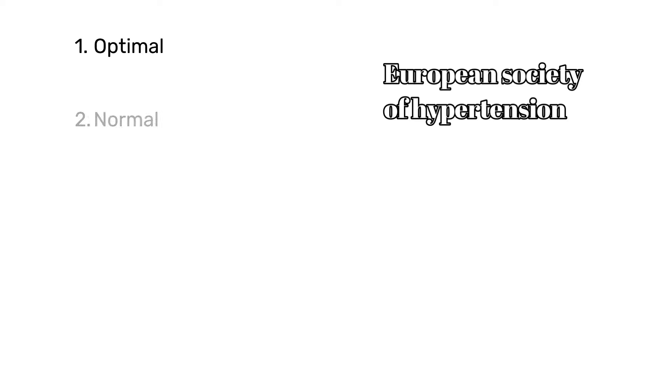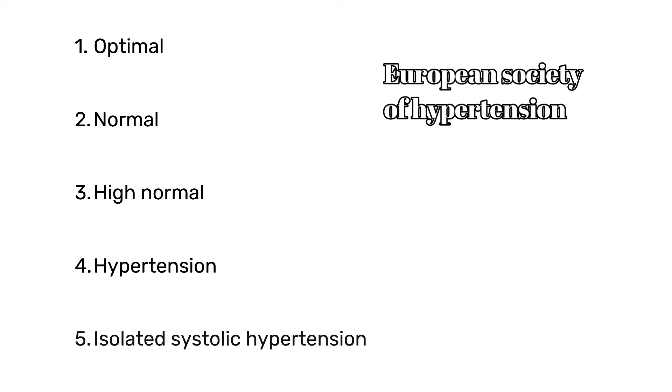This classification is provided by the American Heart Association. Now let's look at the classification provided by the European Society of Hypertension. They have divided blood pressure into five major categories: optimal, normal, high normal, hypertension, and isolated systolic hypertension.